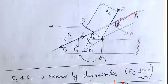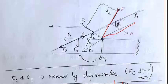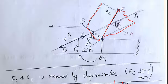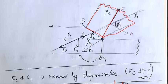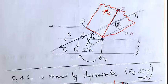We have the cutting edge here. Then this is the chip. If you are looking here, we have reached here. This is the velocity of the chip, in this direction.